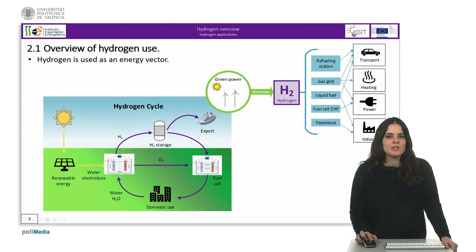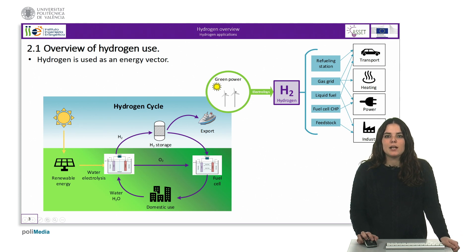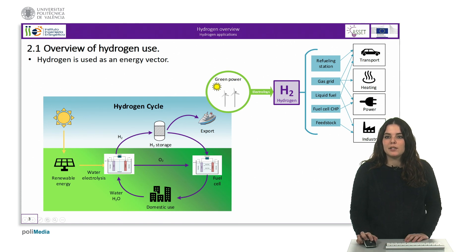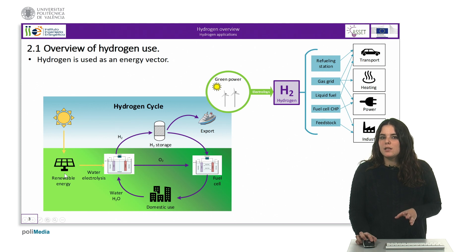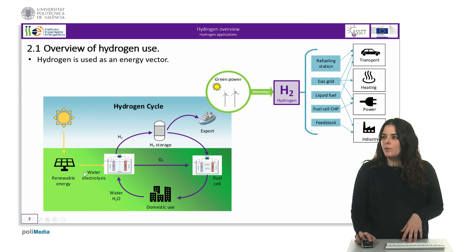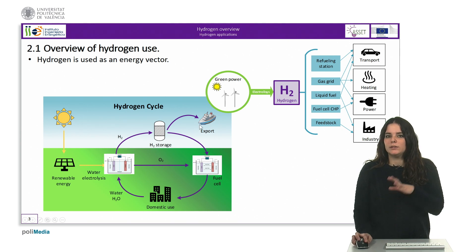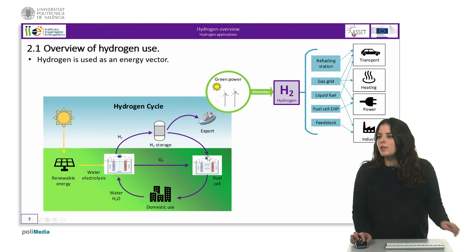When Hydrogen is considered as an energy vector, it means that firstly some kind of energy is used to obtain Hydrogen and store it. For example, Hydrogen can store energy coming from renewable energy sources where there is a mismatch between supply and demand. When this stored energy is required, Hydrogen can be transported to a place where it is needed and used to produce electricity in a fuel cell.